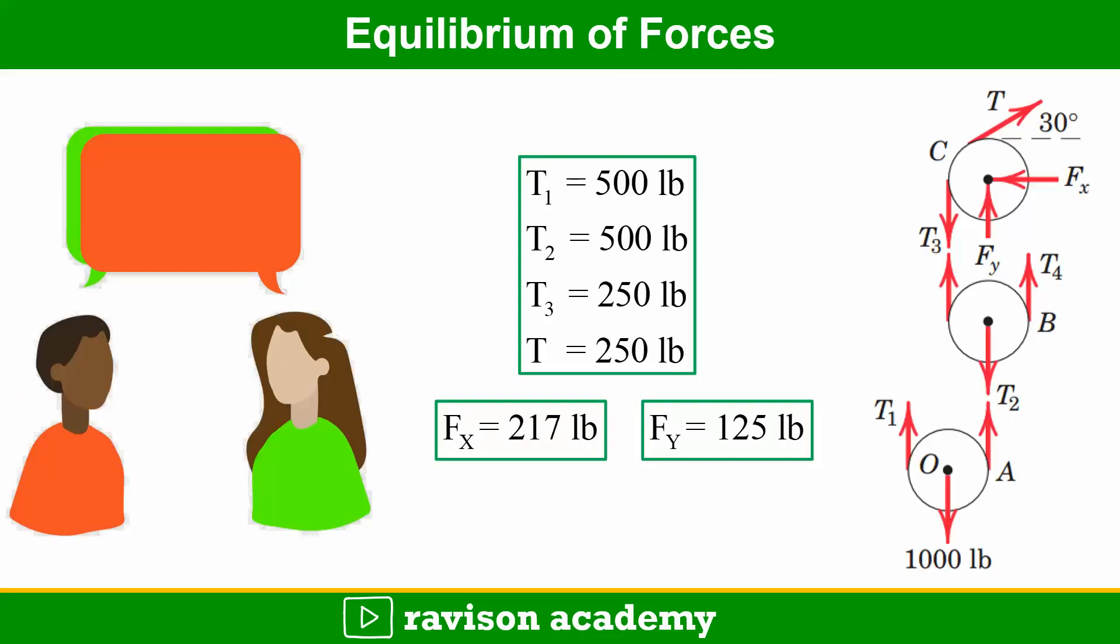So the answers are: T1 is equal to 500 lb, T2 is equal to 500 lb, T3 is equal to 250 lb, T is equal to 250 lb, and Fx equals 217 lb, and Fy equals 125 lb.